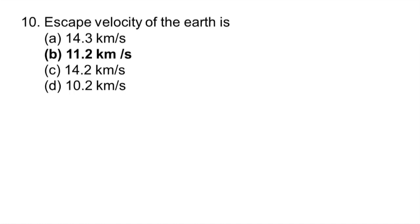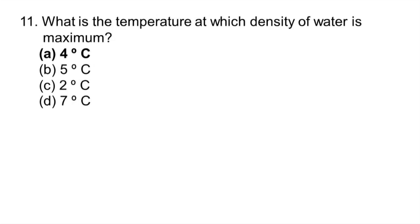Escape velocity of earth is 11.2 km per second. What is the temperature at which density of water is maximum? 4 degrees Celsius.